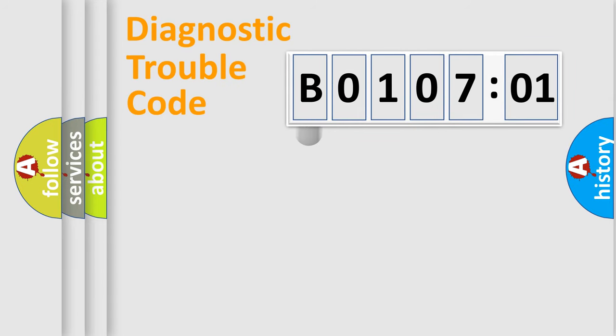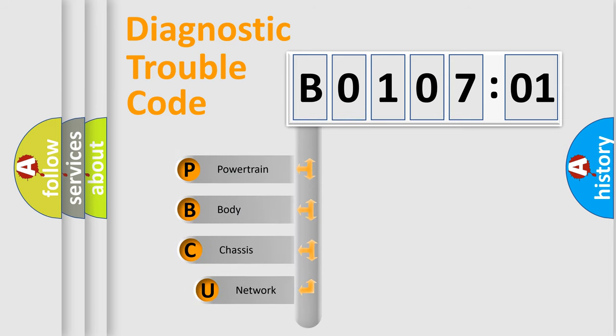First, let's look at the history of diagnostic fault code composition according to the OBD2 protocol, which is unified for all automakers since 2000. We divide the electric system of automobile into the four basic units.